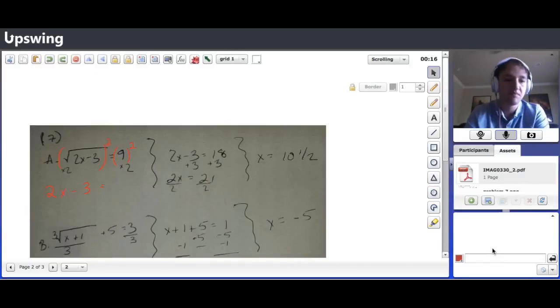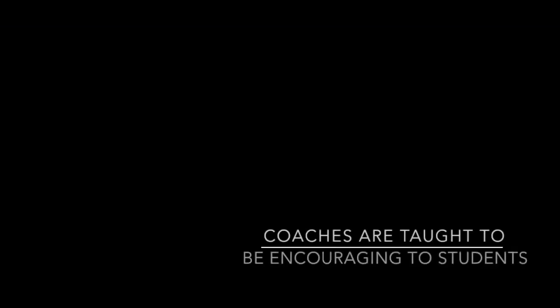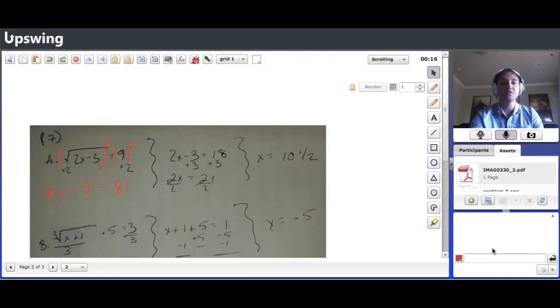Uh, so that would be 81? Correct. Yeah, so basically that you're getting there 2X minus 3 equals 81. And then it would just go on continuing to solve the rest of the equation like you did. So what would you say would be acceptable from here to solve for X?